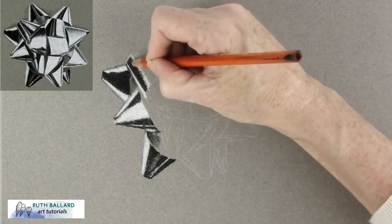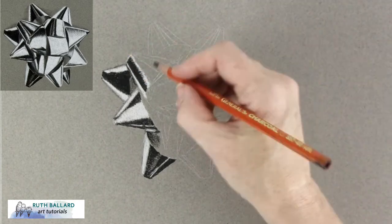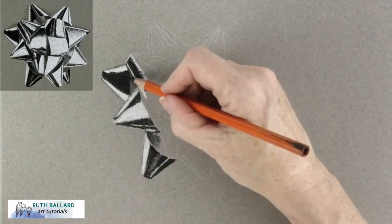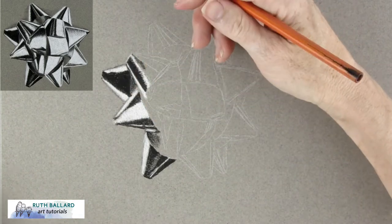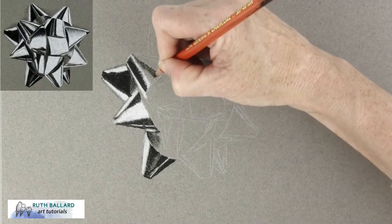By creating either straight lines or jagged edges you can achieve the curves in the bow and anywhere where you need to lift pigment you can just use a kneaded eraser.